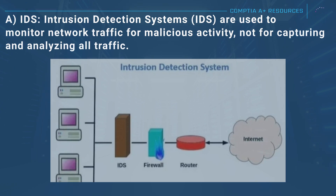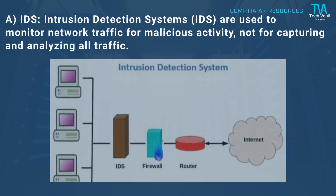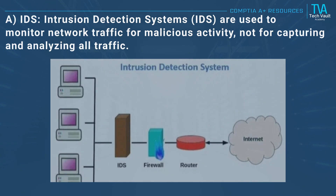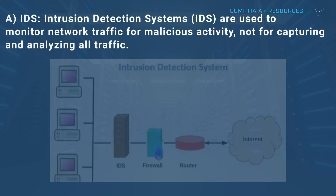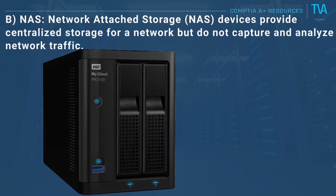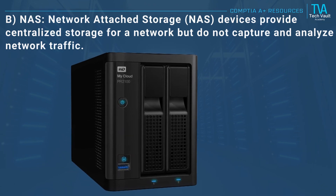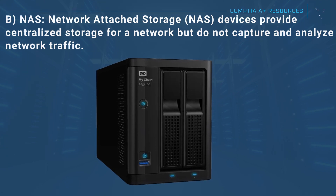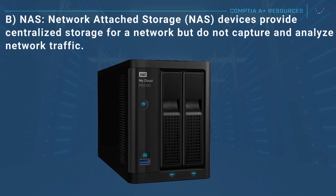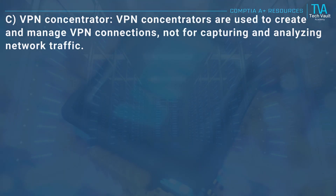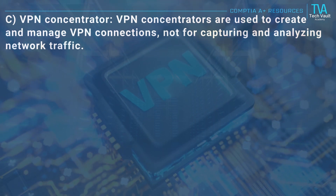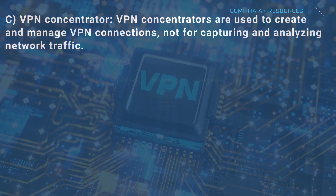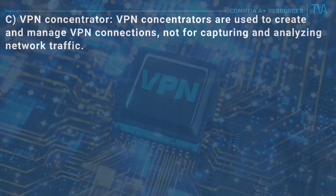A, IDS: intrusion detection systems are used to monitor network traffic for malicious activity, not for capturing and analyzing all traffic. B, NAS: network attached storage devices provide centralized storage for a network but do not capture and analyze network traffic. C, VPN concentrator: VPN concentrators are used to create and manage VPN connections, not for capturing and analyzing network traffic.